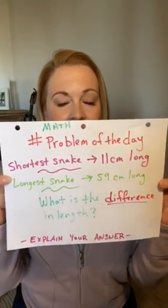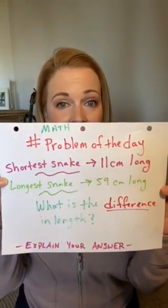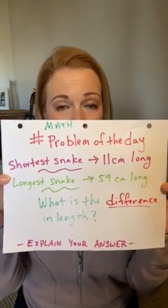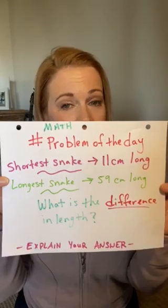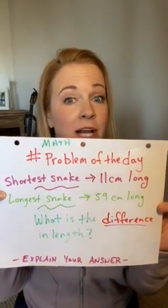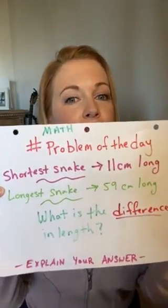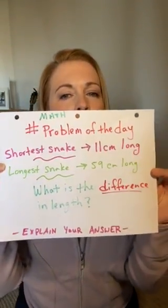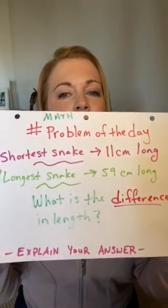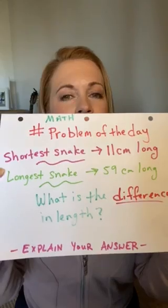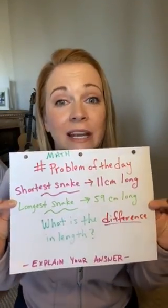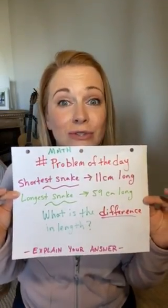Okay, can you guys see this? The shortest snake is 11 centimeters long. The longest snake in the reptile house is 59 centimeters long. So what is the difference in length? Please explain your answers.